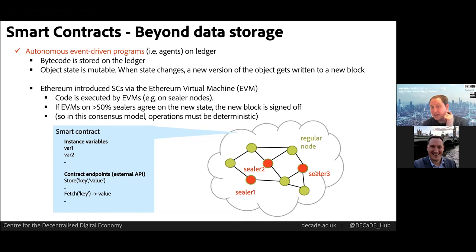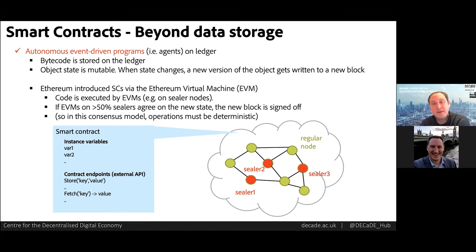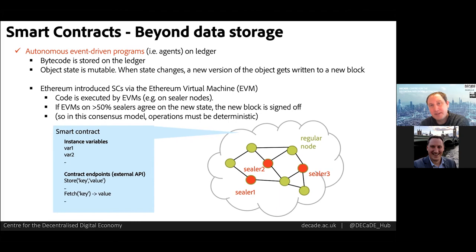Just as we can store data immutably using distributed ledgers, we can also store programs or bytecode on the DLT. The DLT terminology for this is smart contract — the technology has its roots in financial use cases — but basically they're event-driven programs that are invoked by some API call or triggered by some trusted external event. A smart contract is just an object in a traditional object-oriented programming sense. It has functions or endpoints and it has states — instance variables within it. The functions or logic can't change, but the state can. When the object state gets mutated by a method, a new version of it gets written to the chain. So it's possible to go back in time and audit all versions of an object state — no data is ever lost on a DLT.